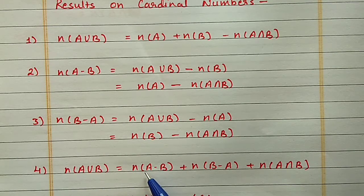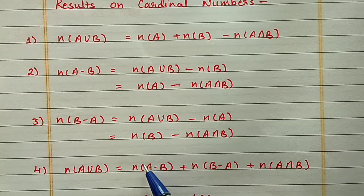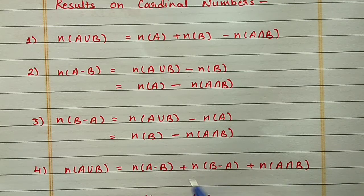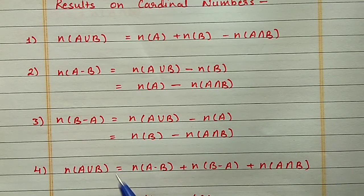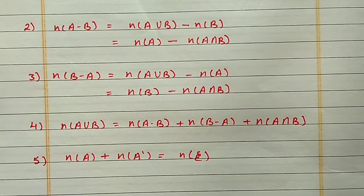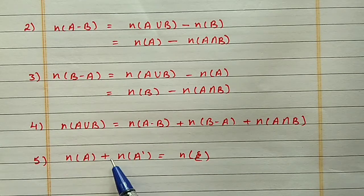The fourth property is N(A∪B) = N(A - B) + N(B - A) + N(A∩B). A - B means elements which are only in A, B - A means elements which are only in B, and then we add the common elements which are in both A and B, so together we get A∪B.